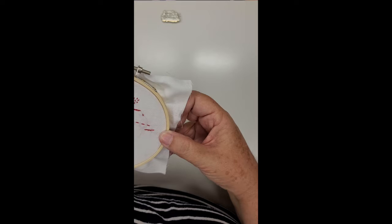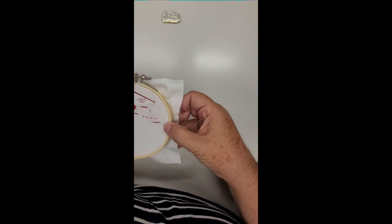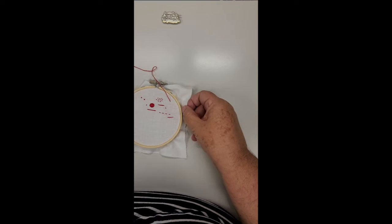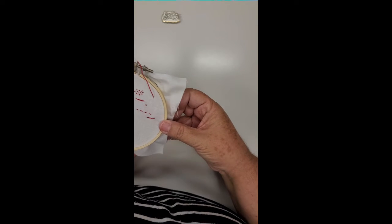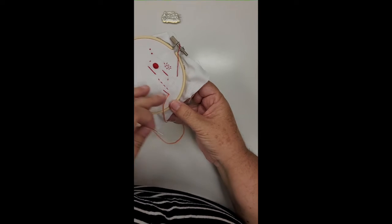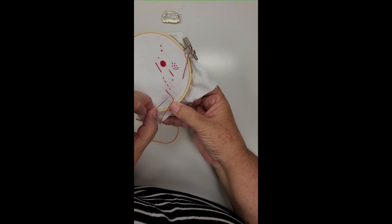When you're done with all your backstitching, I'm just going to park my needle up here. You're going to come up with another color. This is whipped backstitch, right? And this is a tapestry needle, actually.